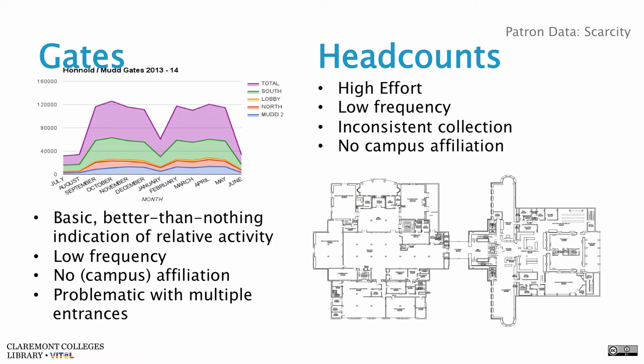Probably all libraries have electromagnetic gates that make sure books don't go out through them. They also count people — any electromagnetic disturbance through that gate gets counted, going and coming — which means that data is pretty useless because you're just counting relative activity. I can go and come out through different gates. I've got three entrances in our building. So it gives you this kind of relative busyness number that isn't helpful. It doesn't tell me what campus they were from.